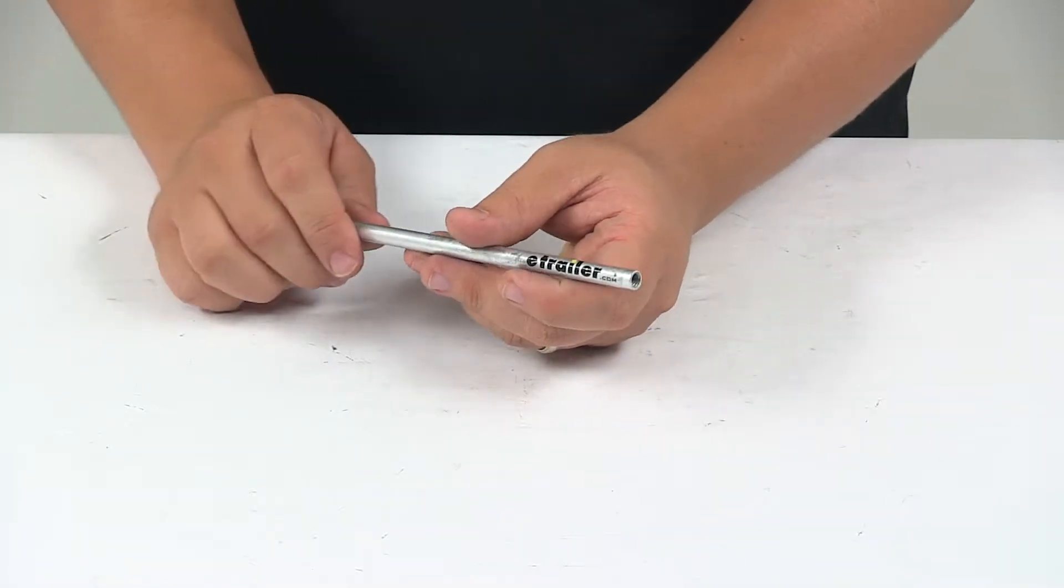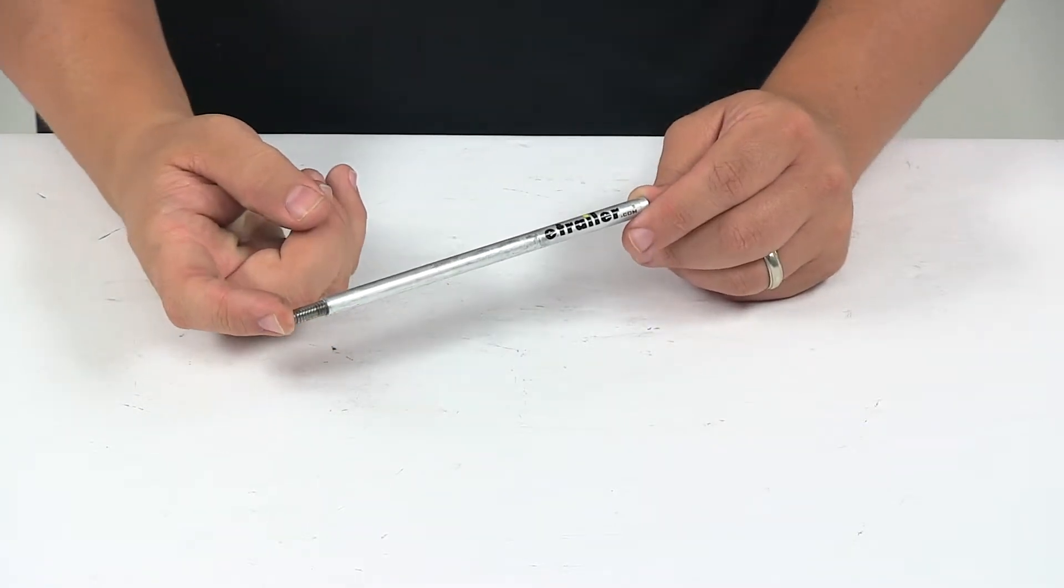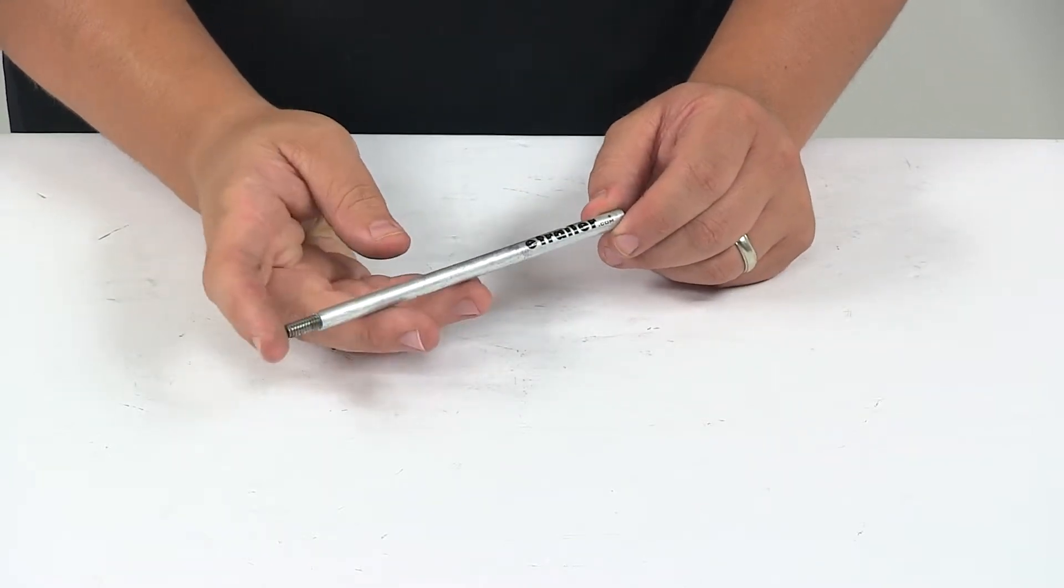Today we're taking a look at an extension rod for Bristol waste valves. This extension tube makes it easier to reach your waste valve handle. This can also be used as a replacement tube for your waste valve.